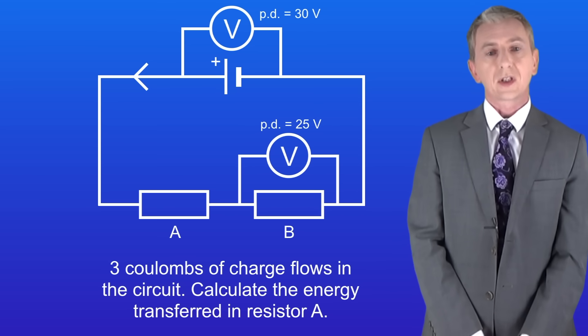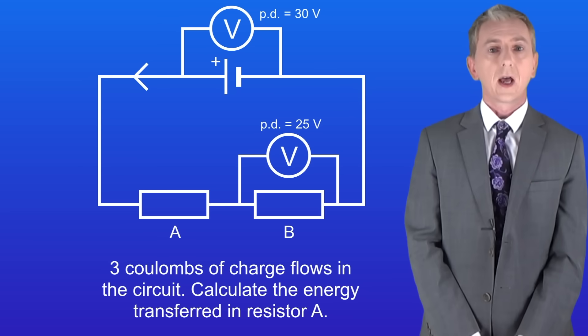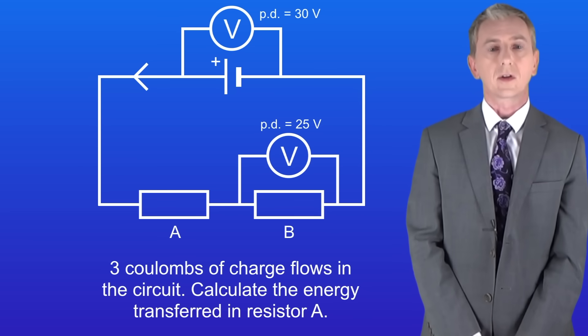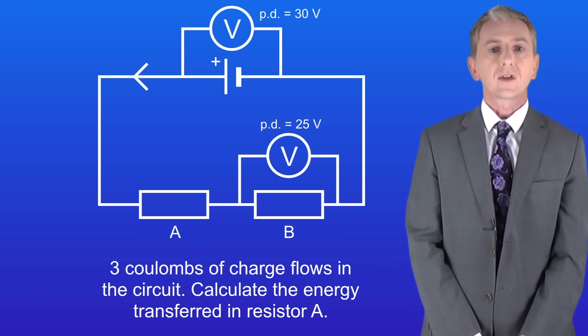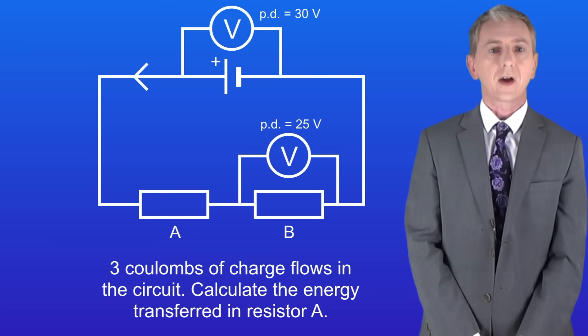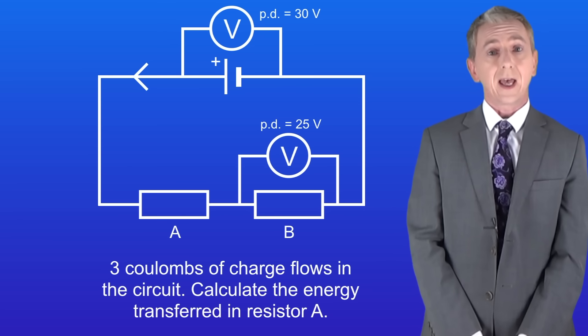Okay we've got a cell with a potential difference of 30 volts and we've got two resistors in series. Remember that potential difference is shared across components in series. Resistor B has a potential difference of 25 volts. So resistor A must have a potential difference of 5 volts.